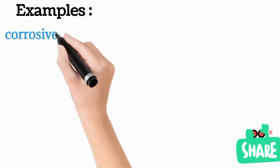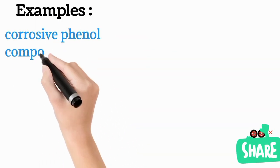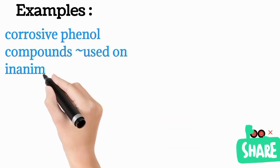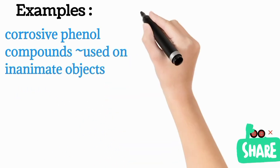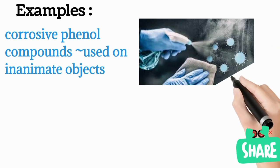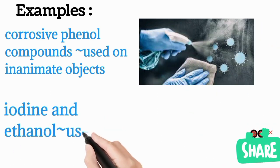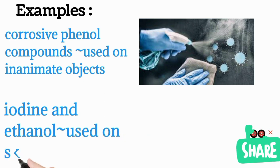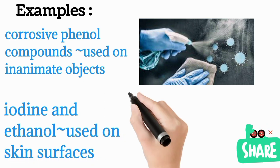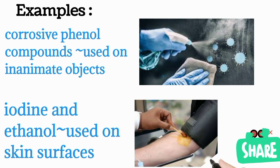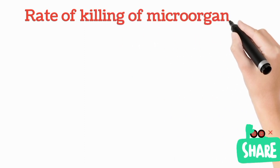Examples of disinfectants include corrosive phenol compounds, which are used on inanimate objects — that is, various non-living surfaces. Iodine and ethanol are other examples of disinfectants used on skin surfaces.